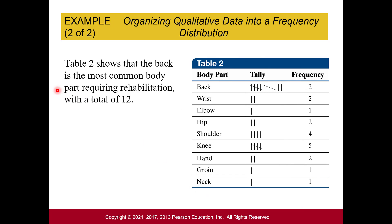For a frequency distribution table, we take the categories, organize those, and tally how many occurrences there are in each category. Back occurred the most often with 12, then wrist, elbow, and so on. The tally marks help because you can just count them at the end as you go down your raw data list.